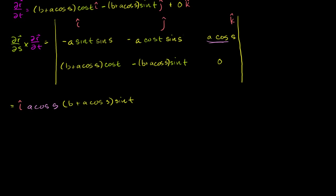Now it's going to be minus j — you remember when you take the determinant, you have this checkerboard of switching signs. So it's minus j times, crossing out that row and that column. It's going to be this term times this term minus this term times this term. The negative times negative cancel out, so you're left with minus j times (b + a·cos(s))·cos(t) times a·cos(s).